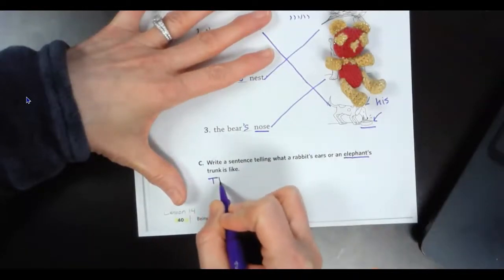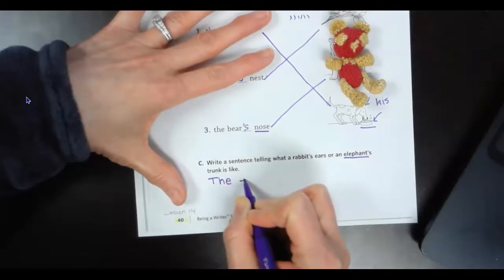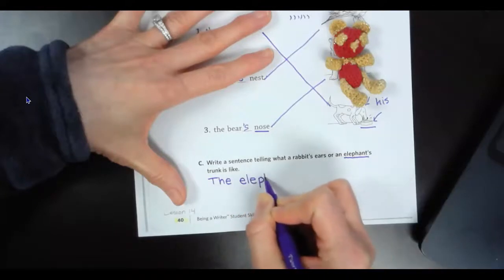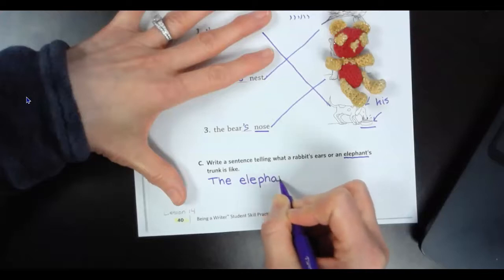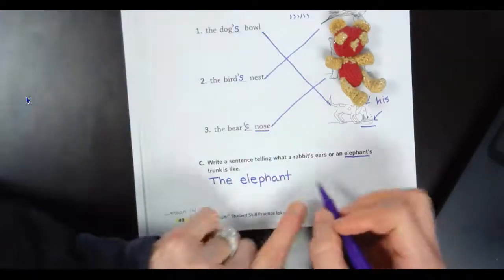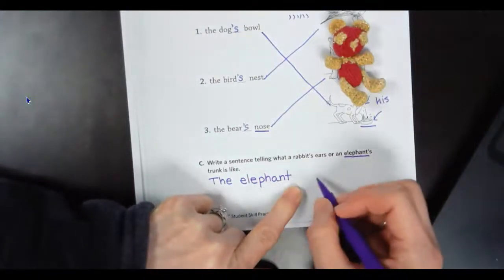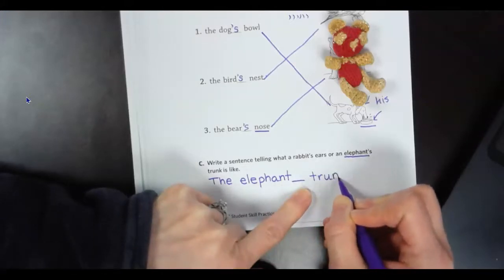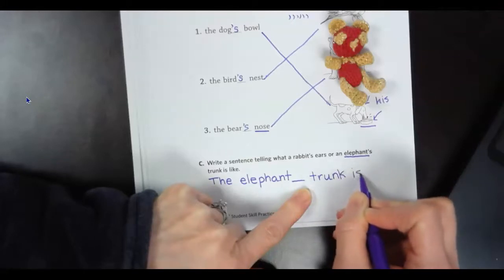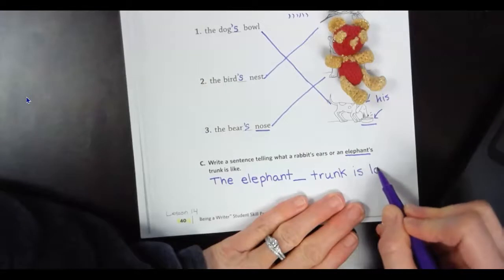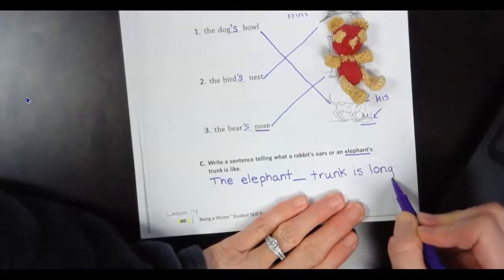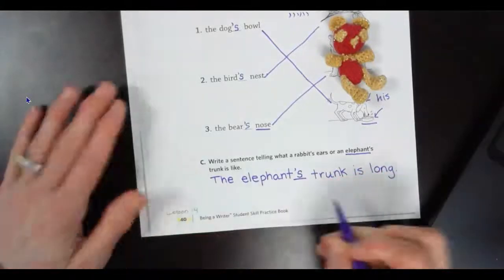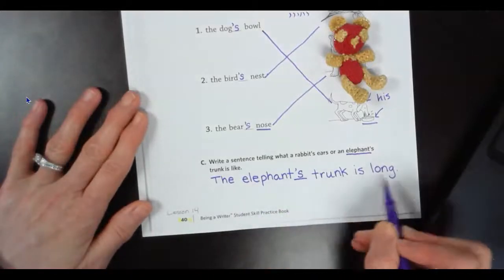All right. The, T-H-E, elephant, L-E. We've got that P-H together that makes an F sound. The elephant. Now, what do I need to write to show that the elephant is going to own its trunk? So I'm going to say the elephant something trunk is long. What do I need to go back and add? Oh, my gosh. You guys are so smart. Yes. I have to add the apostrophe S so we know that that trunk belongs to no other elephant but the one we're talking about. The elephant's trunk is long.